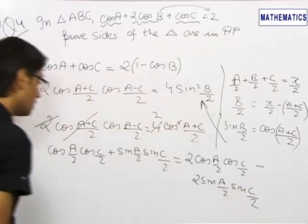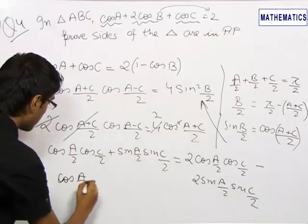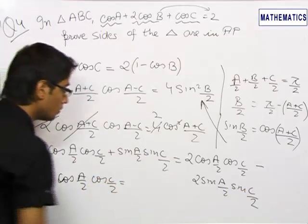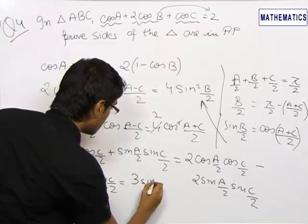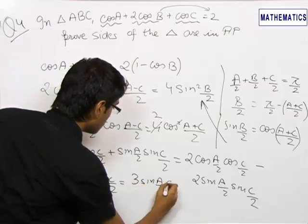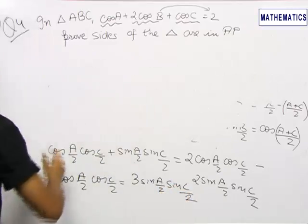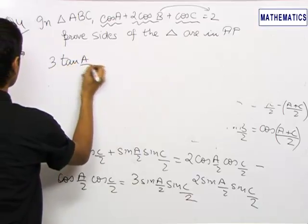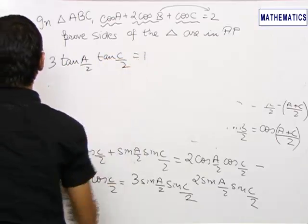Rearranging, we get cos(A/2)cos(C/2) = 3sin(A/2)sin(C/2), which gives us tan(A/2)tan(C/2) = 1/3.